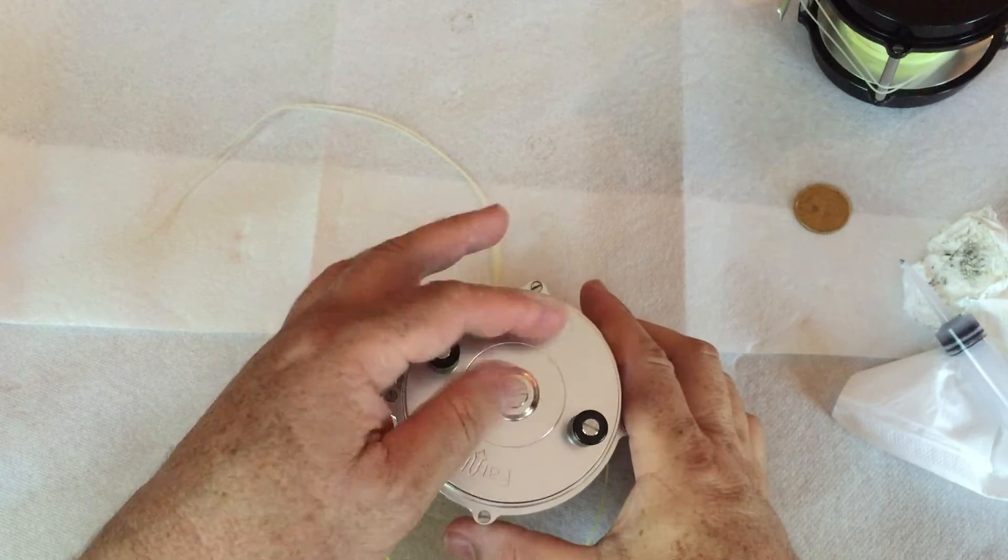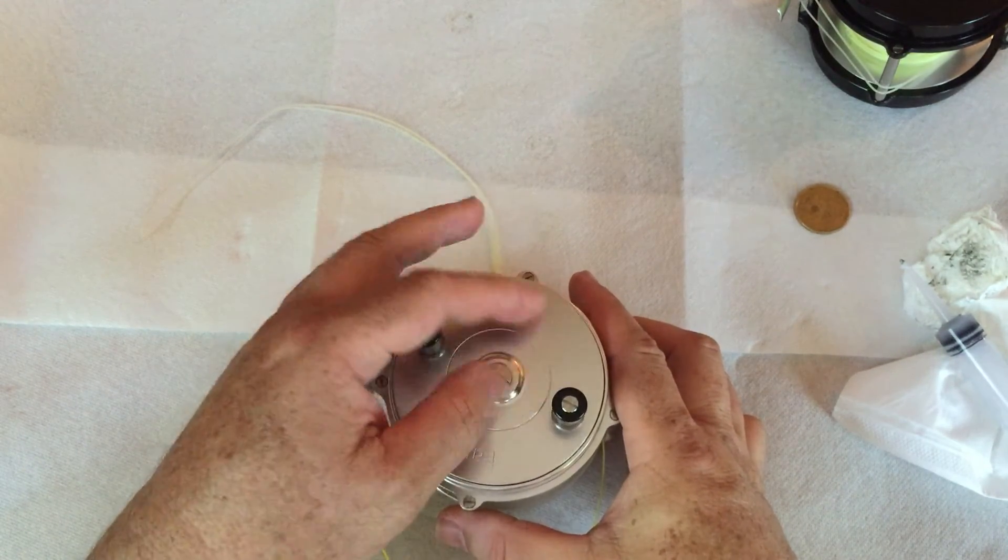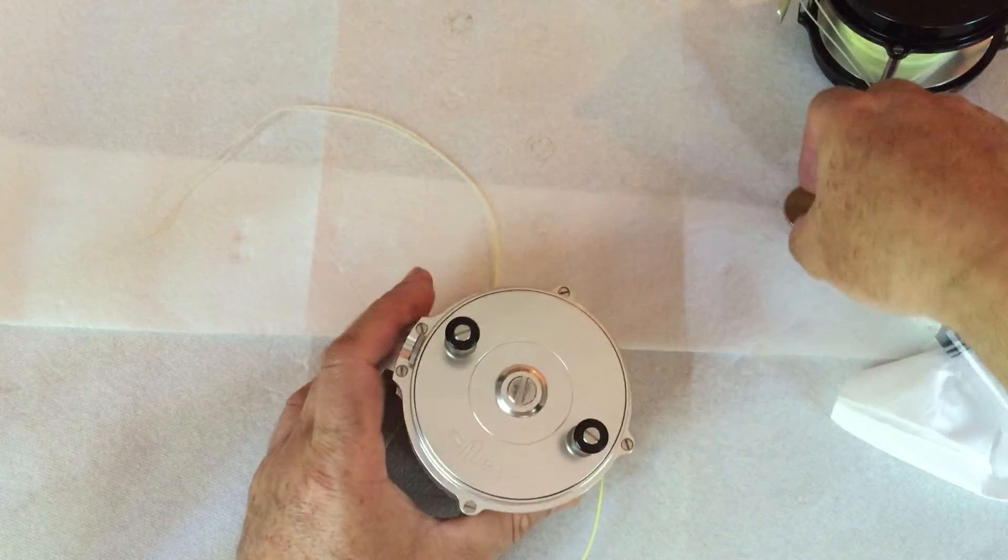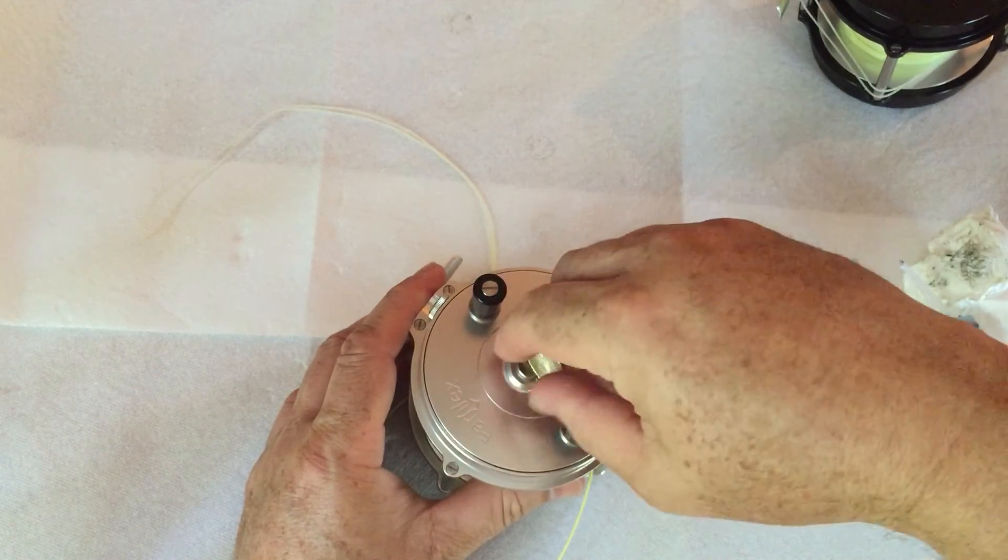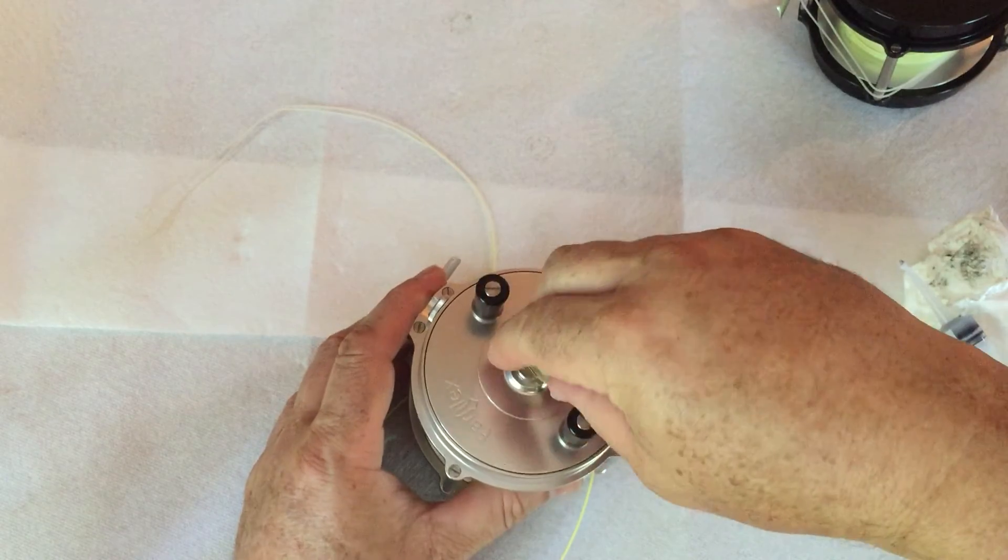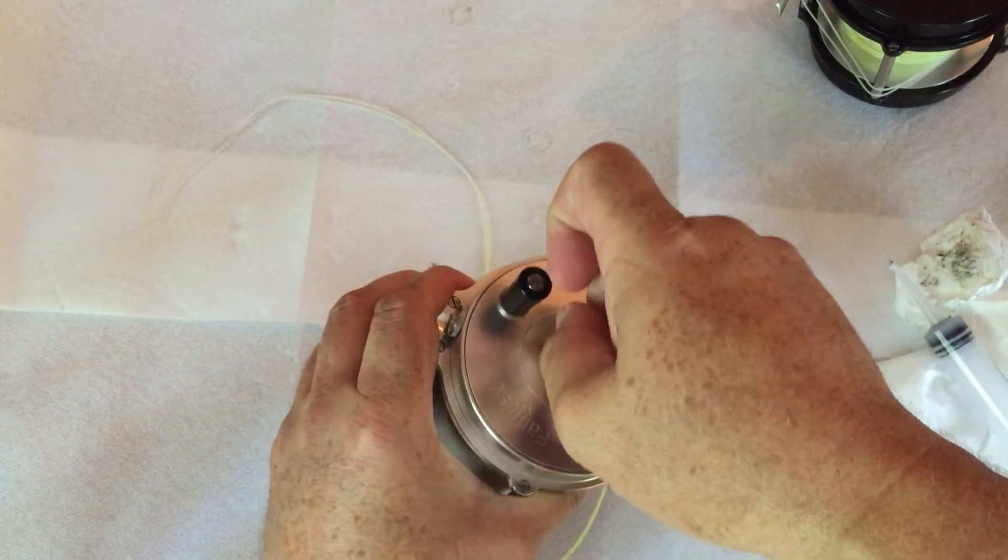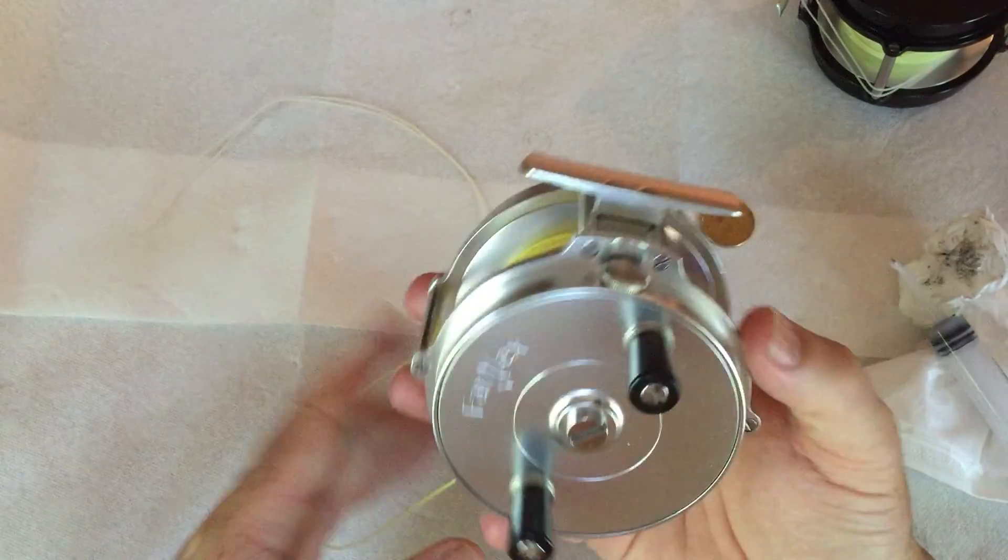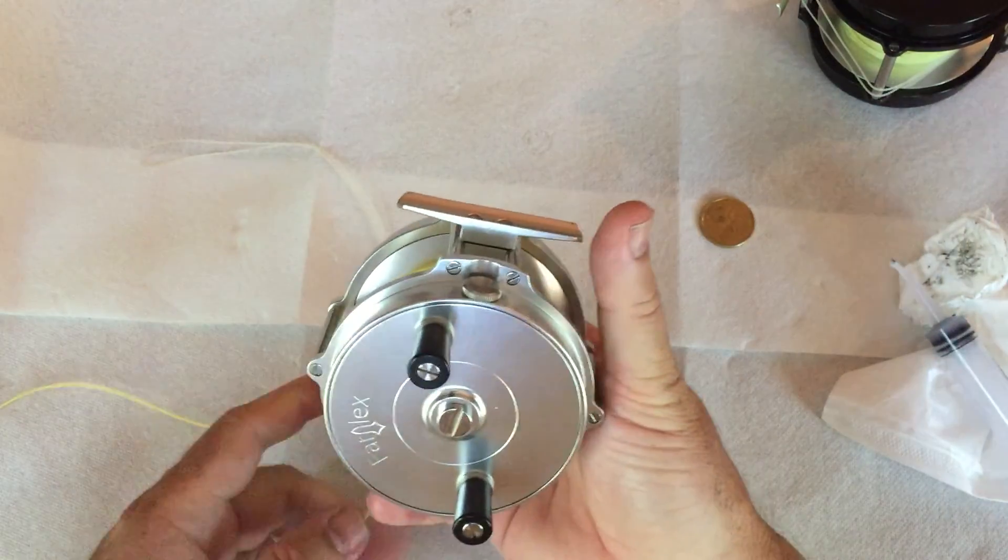Start the screw with my fingers, and as far down as it'll go, I'll do it by hand. And then I'll use the loonie, tighten it up, and that's all there is to it. Back in business.